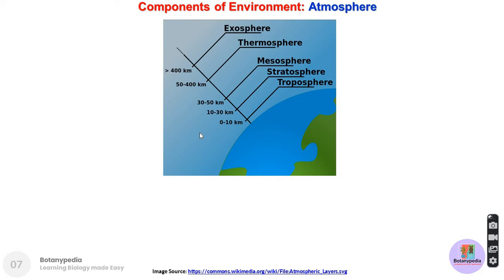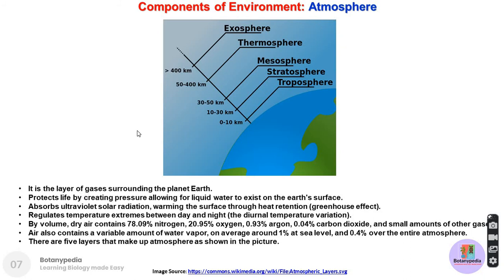The atmosphere has different layers. From 0 to 10 km is the troposphere; from 10 to 30 km is the stratosphere; and from 30 to 50 km is the mesosphere. Atmosphere is the layer of gases surrounding the planet. It protects life by creating pressure, allowing liquid water to exist on Earth's surface. It absorbs ultraviolet solar radiation, warming the Earth's surface through heat retention — also known as the greenhouse effect.